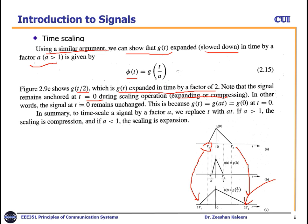Note that the signal remains anchored at t equals zero during any scaling operation — whether compression or expansion. That point is always fixed, because g(at) at t equals zero gives g(0), which is the same for g(t) and g(2t). In summary, to time-scale a signal by a factor a, we replace t by at.